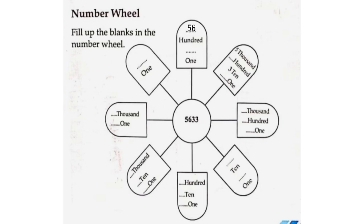For the Number V activity: 5,633 split into 5 thousands, 6 hundreds, 3 tens, and 3 ones. Fill in: 5,600 hundreds, 3 tens, 3 ones — completing the Number V for 5,633.